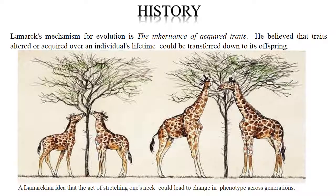The history of epigenetics: Lamarck's mechanism for evolution is the inheritance of acquired traits. He believed that traits altered or acquired over an individual's lifetime could be transferred down to its offspring. Lamarck's idea that the act of stretching one's neck could lead to a change in phenotype across generations — the giraffe explanation is well suited here.